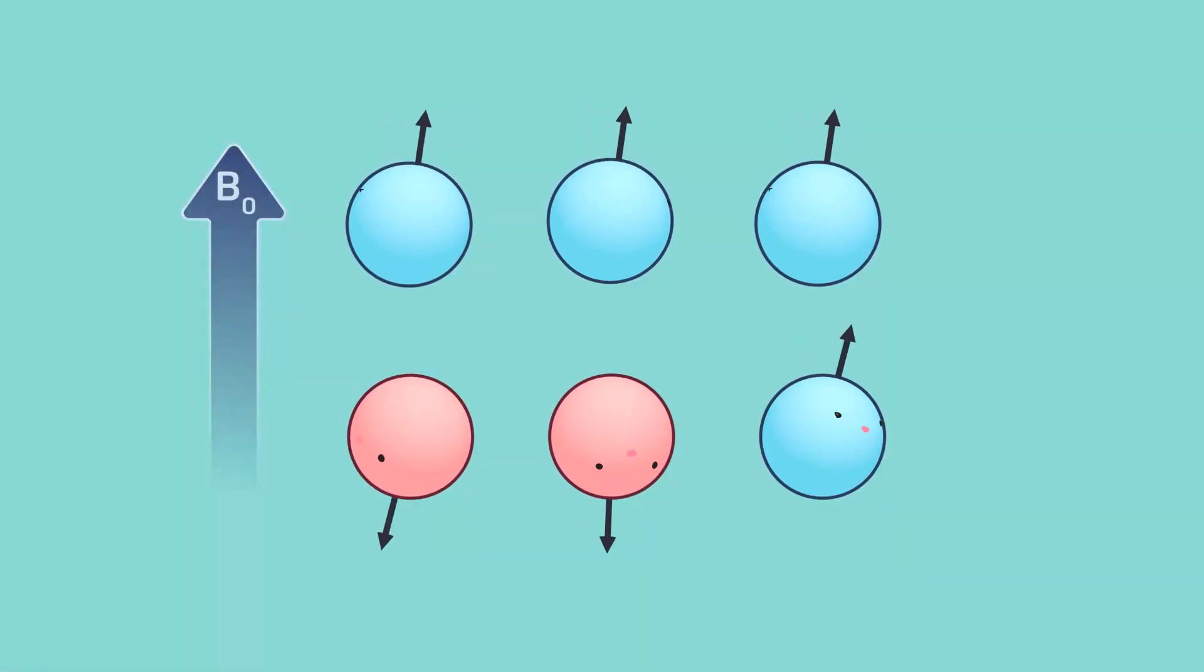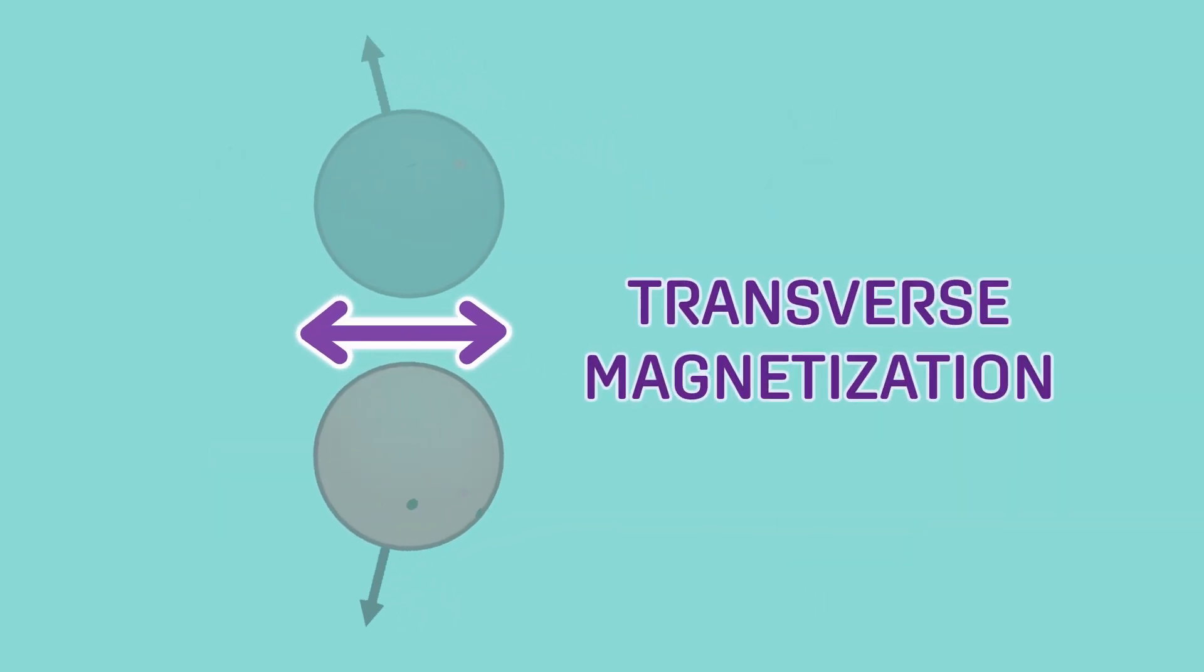That's not all that happens. With some energy applied in the form of the RF pulse, the protons will also precess together in phase. We can think of this brief synchronization as the transverse magnetization of the protons.